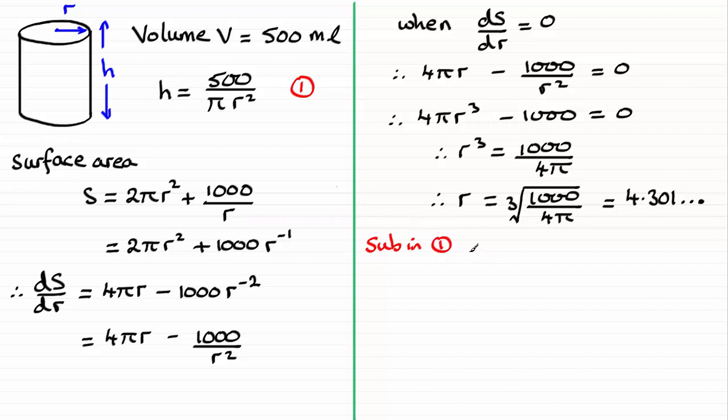Therefore we have h equals 500 all divided by pi times the unrounded version of r, 4.301 and so on, and that's going to be squared. Let's just extend that line there. And if you work this out, you'll find you get 8.602 and so on.